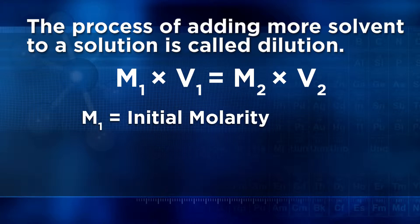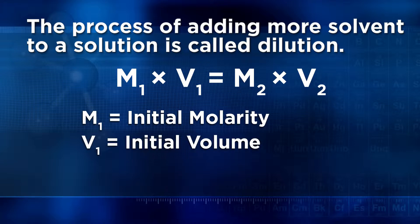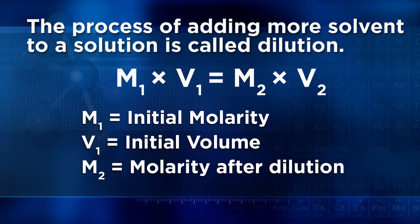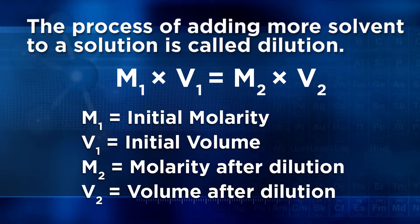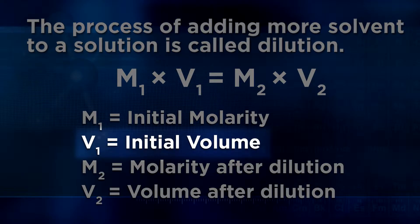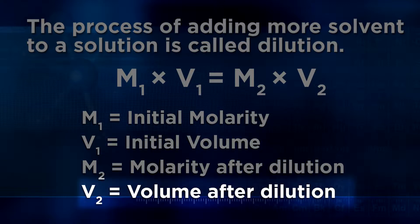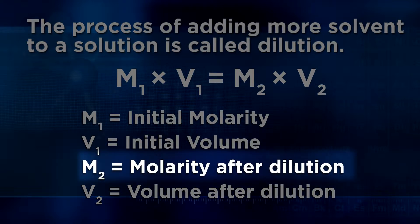In the equation M1V1 = M2V2: M1 equals initial molarity, V1 equals initial volume, M2 equals the molarity after dilution, and V2 equals volume after dilution. In real-life situations, chemists almost always solve for V1, since that represents the volume of the initial concentrated stock solution that we need to draw out to dilute. We typically know the final volume and the desired concentration of the solution after the dilution.